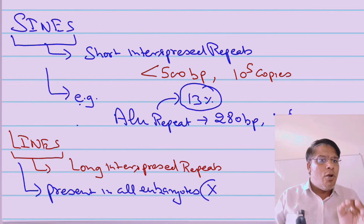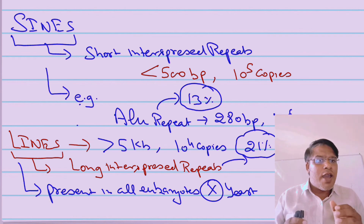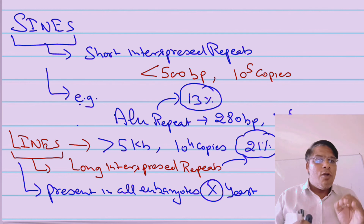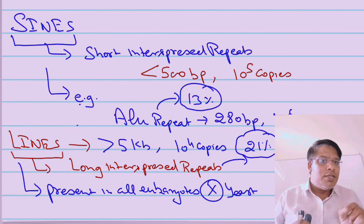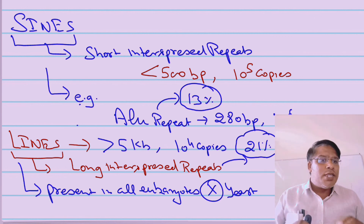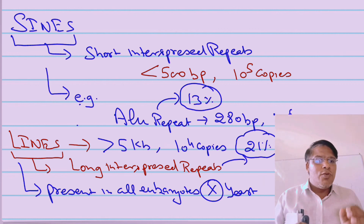LINEs are long interspersed repeats. The DNA is greater than 5 kb in size, and you are going to have multiple copies of the same sequence. These sequences are present in all eukaryotes except yeast. LINEs represent 21% of the human genome.